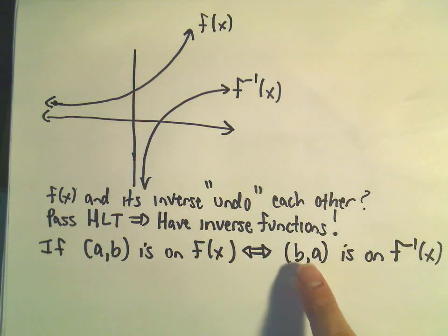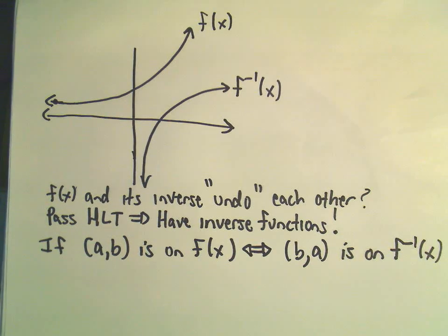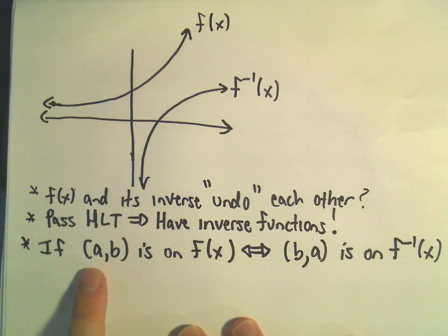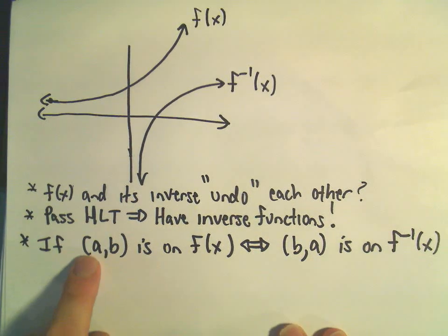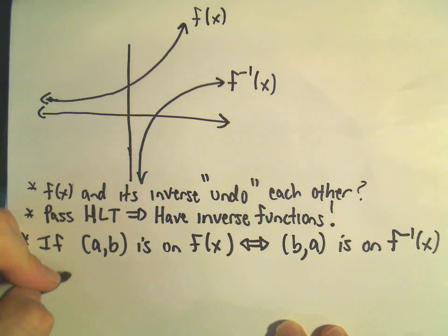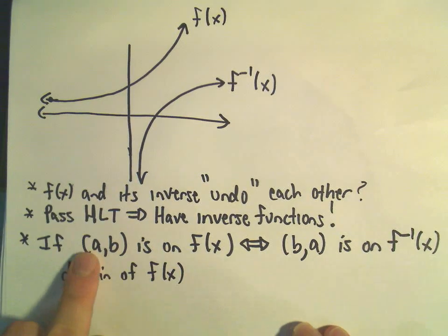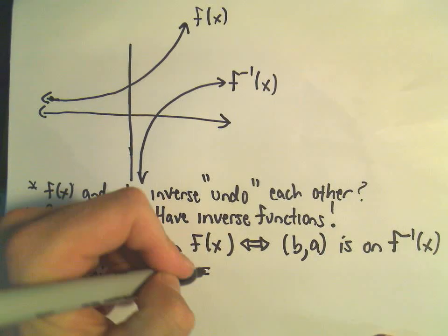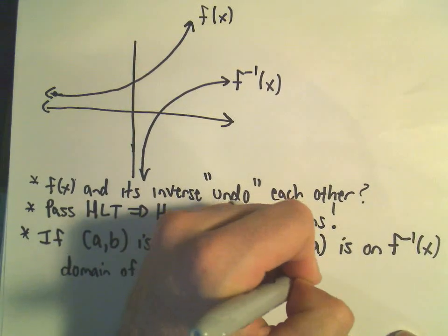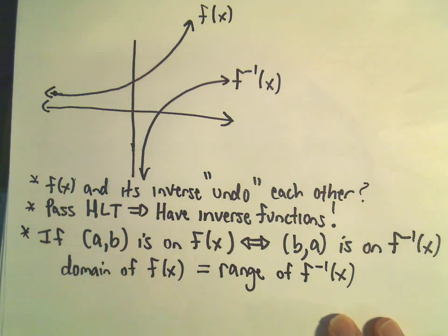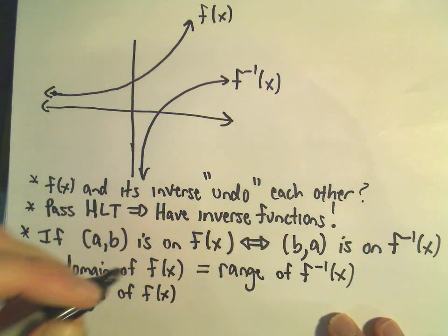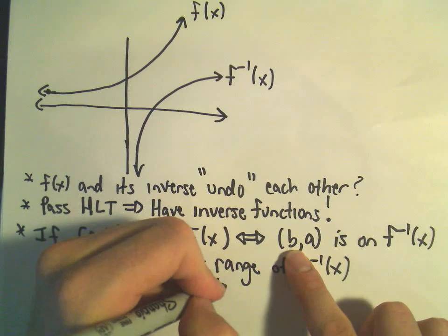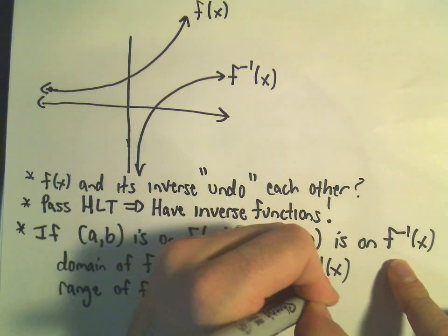Let's take this idea a little further. If (a, b) is on f of x and (b, a) is on the inverse, notice the x coordinates — which is the domain — the x coordinates of f of x turn into the y coordinates of the inverse function. So really the domain of your original function f of x is going to be the same thing as the range of the inverse function. And likewise, the range of f of x — those are the y coordinates — are now going to turn into the new x coordinates, so the range of f of x is going to turn into the domain of the inverse function. That's another very crucial idea.